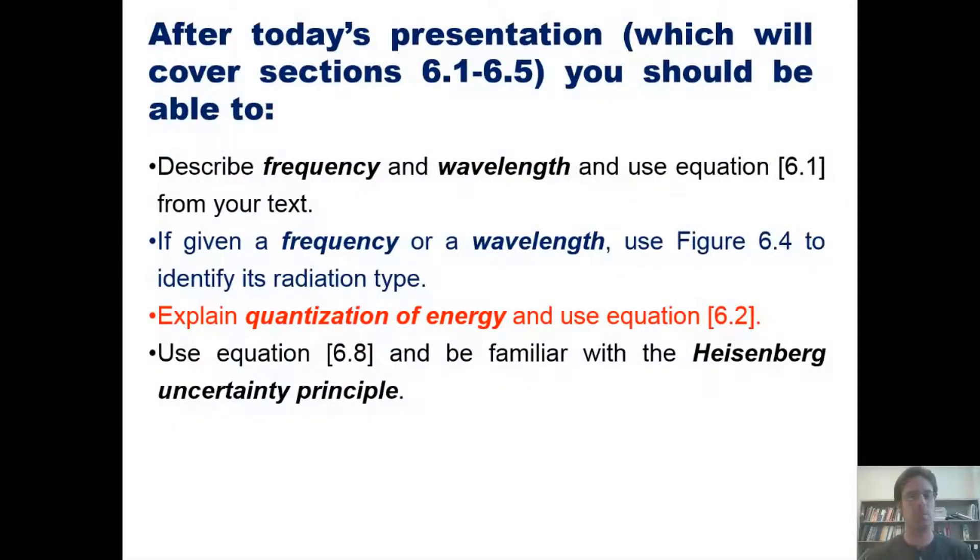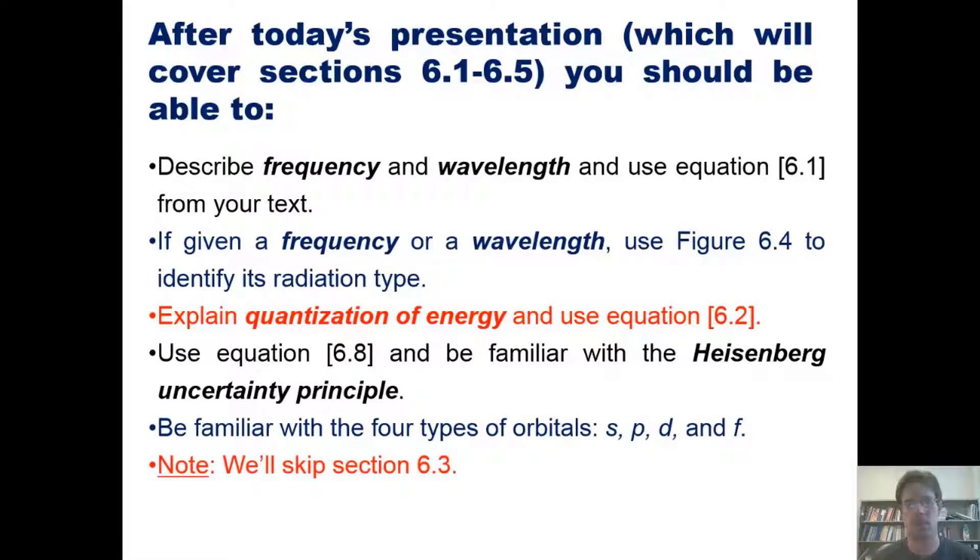Use equation 6.8 and be familiar with the Heisenberg Uncertainty Principle. Be familiar with four types of orbitals: S, P, D, and F, and note that we'll skip section 6.3.